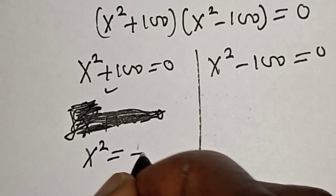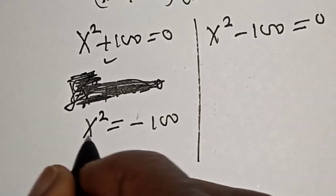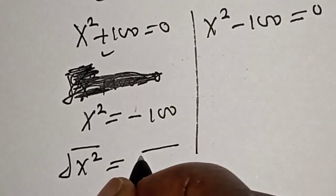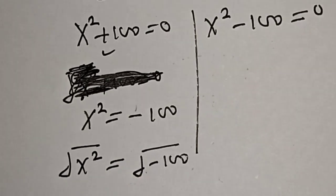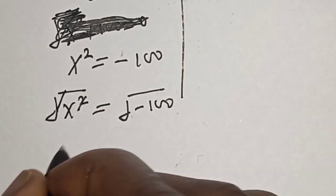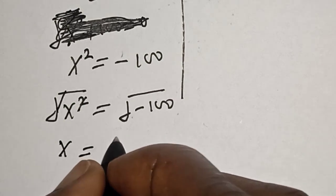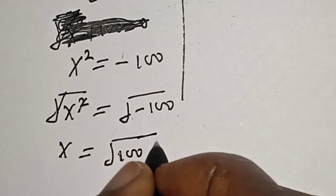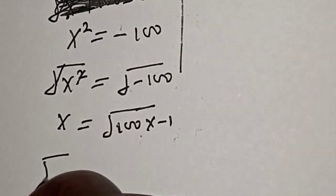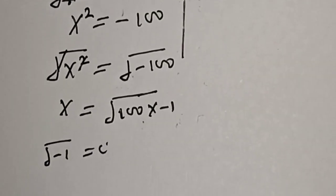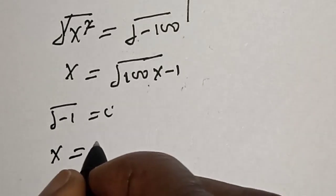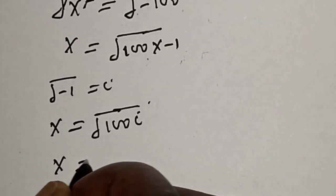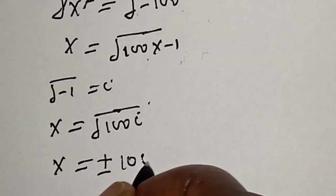s squared is equal to minus 100. Now let's take the square root of both sides: square root of s squared equals square root of minus 100. This gives s equals square root of minus 1 times square root of 100. We know that square root of minus 1 is equal to i, so s equals square root of 100 times i, therefore s equals plus or minus 10i.